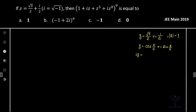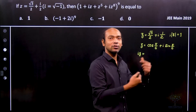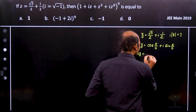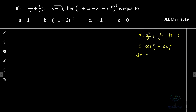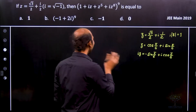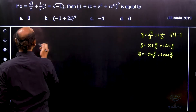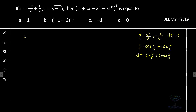Now let's write down iz, because that's the first term we're looking for. If we multiply by i, we get i·cos(π/6) + i²·sin(π/6). Since i² = −1, this becomes −sin(π/6) + i·cos(π/6). So iz = −sin(π/6) + i·cos(π/6).